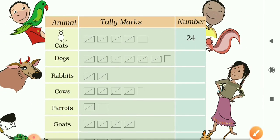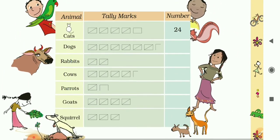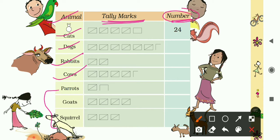Now let's complete the table. In the first column we have the animal names: cats, dogs, rabbits, cows, and myna. The middle column has the tally marks, and the last column is for the numbers. We have to count the tally marks and write their numbers in front of each animal.